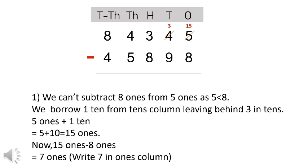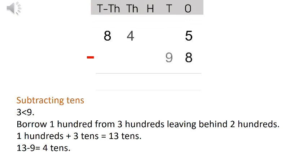Now we can subtract: fifteen ones minus eight ones equals seven. Write seven in the ones column. Subtracting the tens column: three is less than nine, so it needs to borrow one hundred from three hundreds, leaving behind two hundreds. One hundred plus three tens equals thirteen tens. Thirteen minus nine equals four tens. Write four in the tens column.